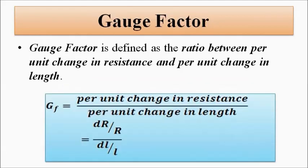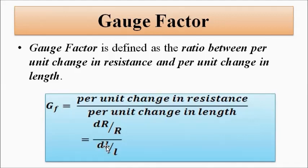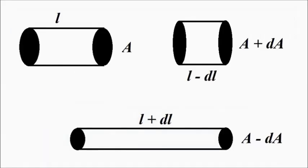Gauge factor is the per-unit change in resistance brought about by the change in dimensions, divided by the per-unit change in length. It is given by (ΔR/R) / (ΔL/L), where ΔR is the change in resistance divided by the original resistance and ΔL is the change in length divided by the original length.